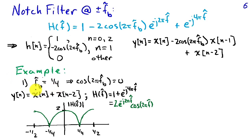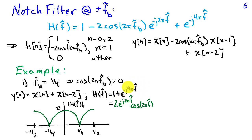We can design notch filters using this general form. Suppose we want a notch at 1/4 cycles per sample: cosine of 2 pi times 1/4 equals cosine of pi over 2, which is exactly 0. So the middle term vanishes and y of n equals x of n plus x of n minus 2, giving h of f hat as 1 plus e to the minus j 4 pi f hat. Factoring out e to the minus j 2 pi f hat from both terms and pulling out a 2, we get 2 e to the minus j 2 pi f hat times cosine 2 pi f hat. The frequency response magnitude indeed goes to 0 at f hat equals 1/4.